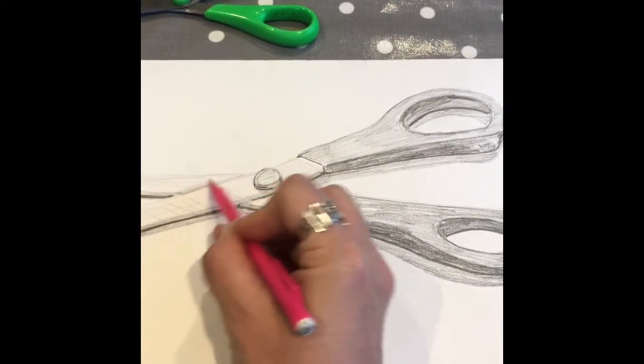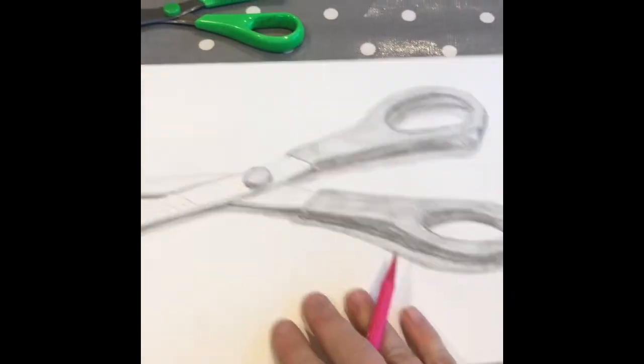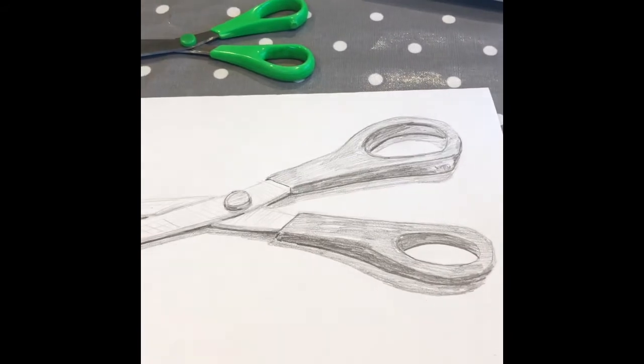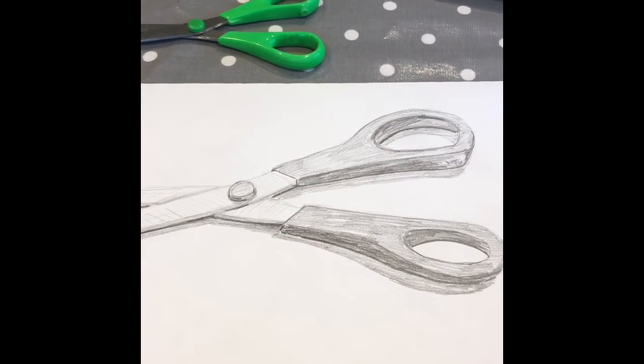When you're doing this, try not to move your object. You can move the paper wherever you like, but try and keep this object, or whatever you're working from, in the same position to keep the shadows the same. That's really quite important.